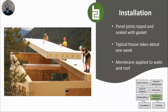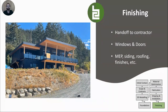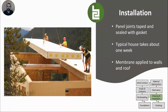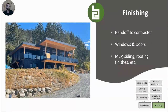Finally, the last step for us is installation. We essentially install all the panels, the joints are taped so we can maintain a good air barrier, and membranes are applied to get everything dry. A typical house for us takes about a week. Then finishing is up to the contractor — to bring the house from what is essentially an envelope and a structure to a finished house that you'll be able to enjoy for a while.